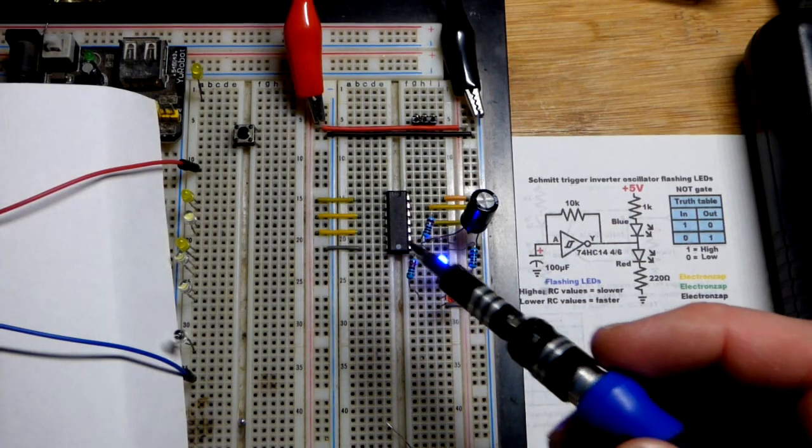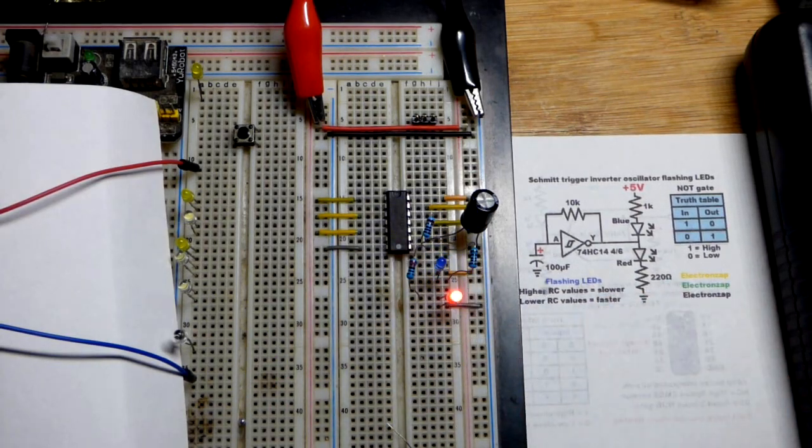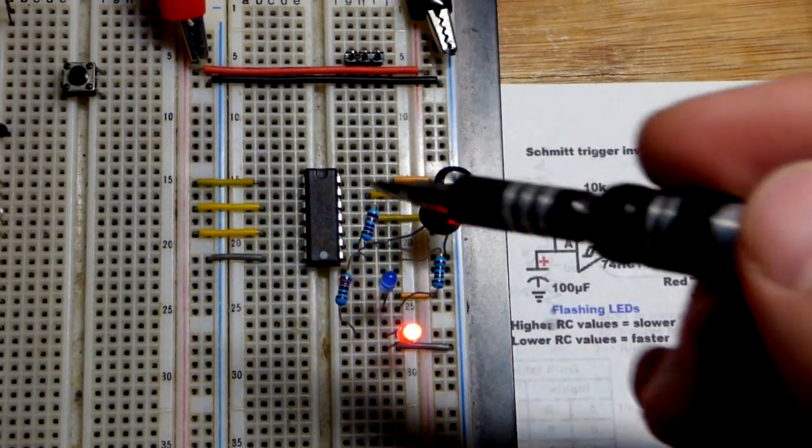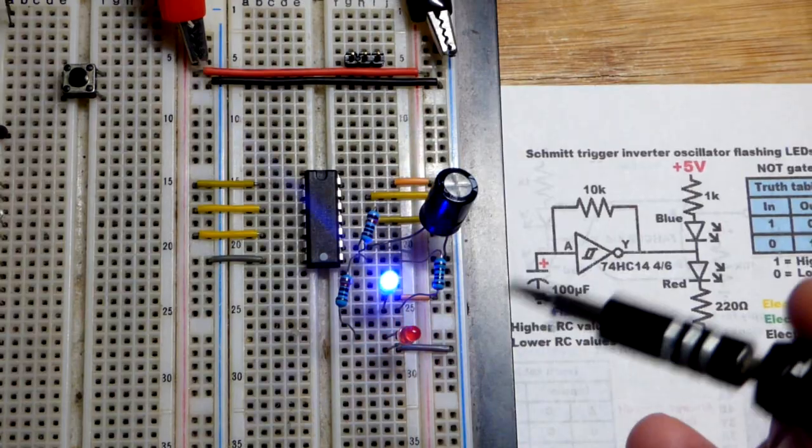So now we're using a Schmitt trigger NOT gate. There's six of them on this 74HC14 right there. We're just using the bottom right one. We tied the inputs of all the ones we're not using to the positive supply to disable them.